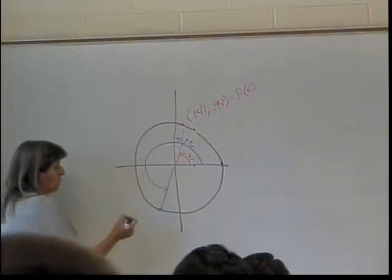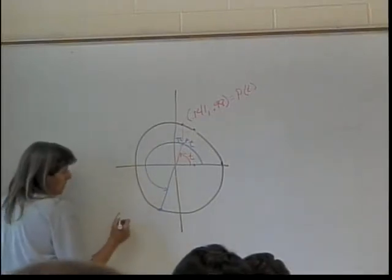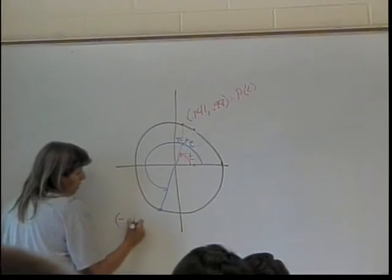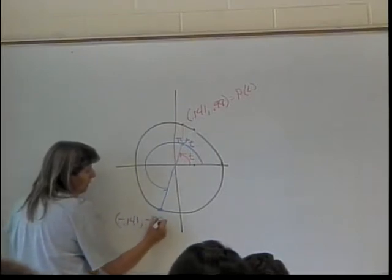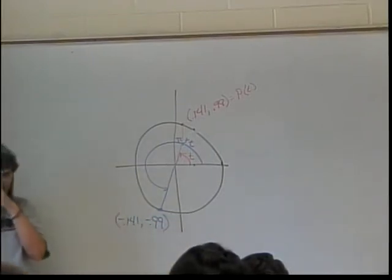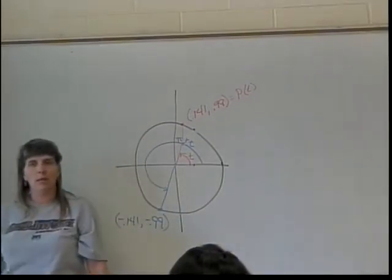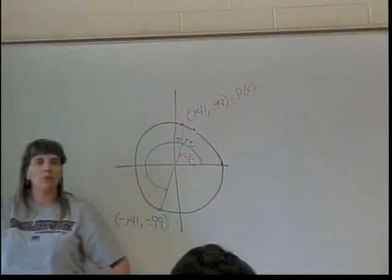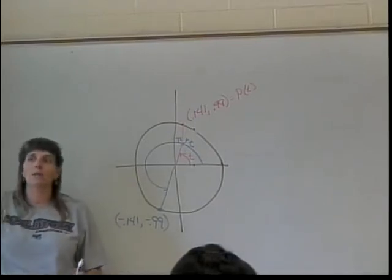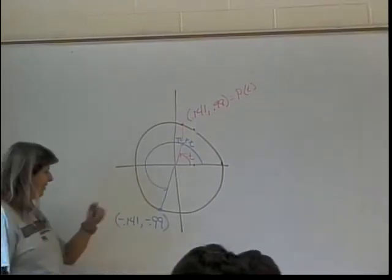Negative direction as opposed to the positive direction. So this would now have coordinates negative 0.141 comma negative 0.99 because you just rotated and because it is symmetric with respect to the x-axis and symmetric with respect to the y-axis and with respect to the origin that's what happens.